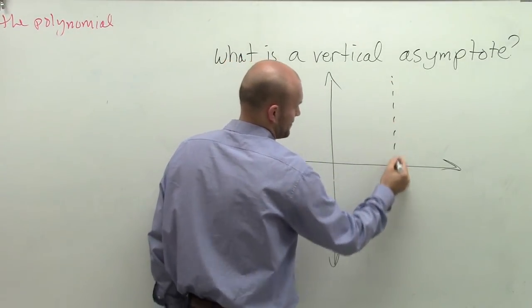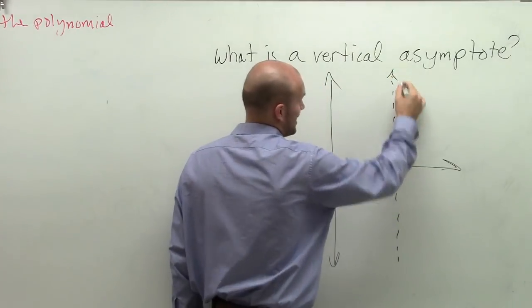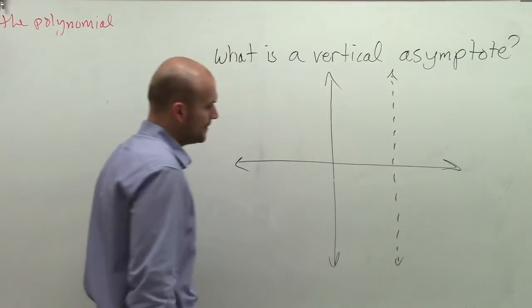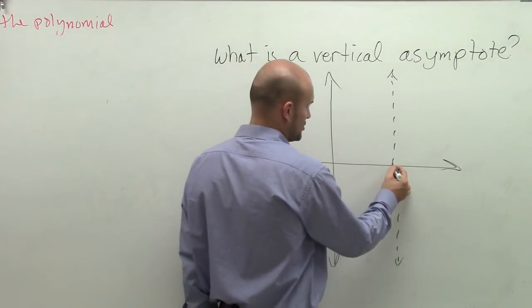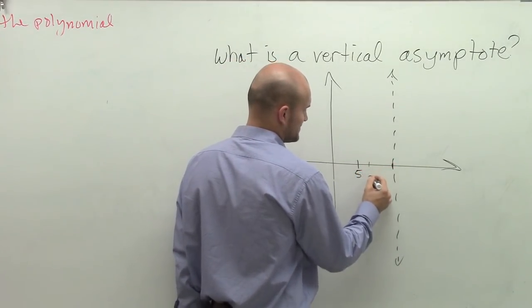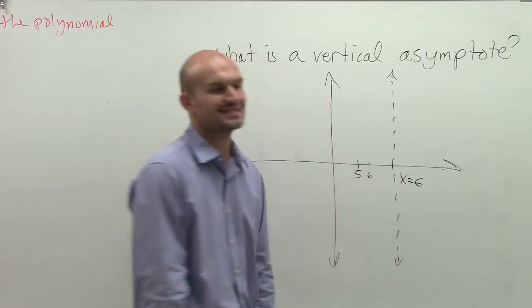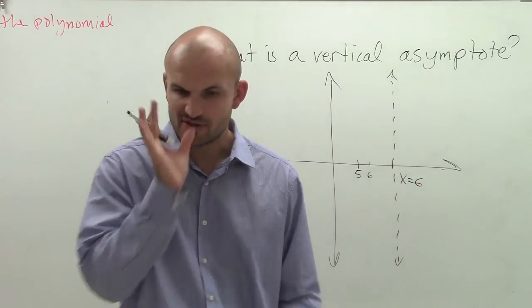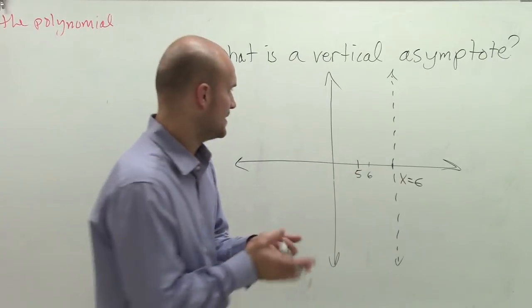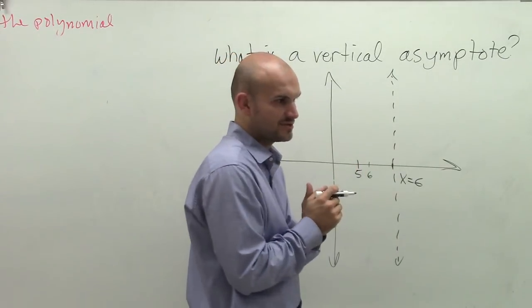So let's say we have an asymptote. We're going to represent the asymptote as this little dotted line. And we're going to say this asymptote, if you have a number, it's five, six, we're going to say this asymptote is at x equals six. All right? So the value of our asymptote is x equals six.